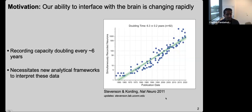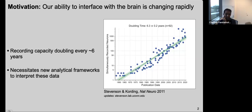What this means is that what worked in the past to analyze and interpret neural data, when we had just a handful of neurons, is probably a little outdated. We need new analytical frameworks in order to interpret these kinds of large-scale datasets.